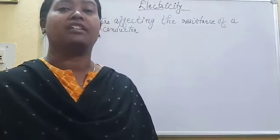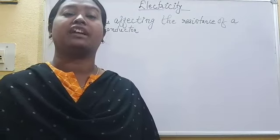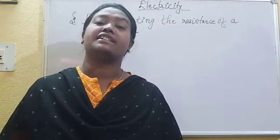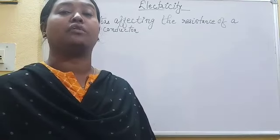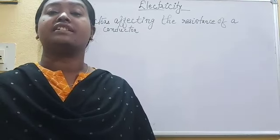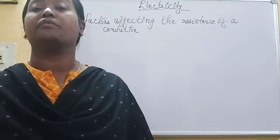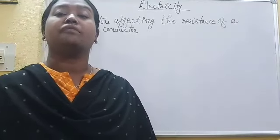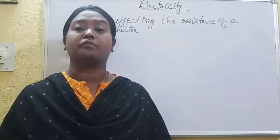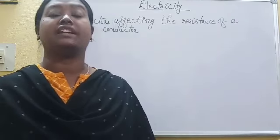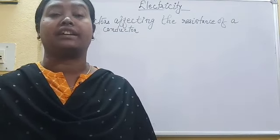Let's come to the next topic: factors affecting the resistance of a conductor. Resistance is the opposition offered by the conductor to the flow of current. Resistance is equal to V upon I, where V is the potential difference and I is the current, obtained from Ohm's law. Now we will see what are the factors that affect the resistance of a conductor.